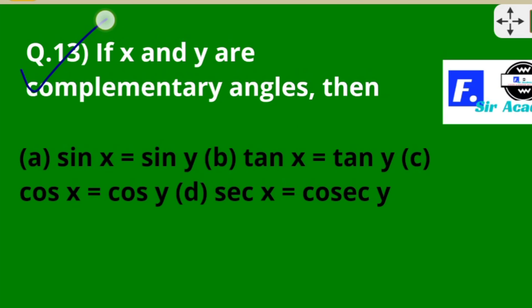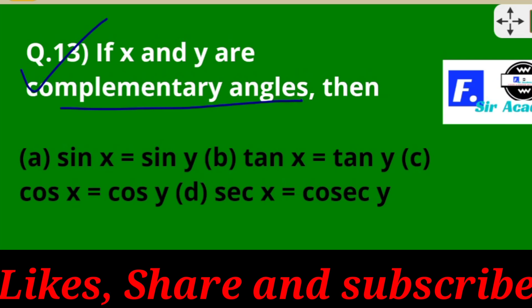Question 13: if x and y are complementary angles, which relationship holds? The options are sin x = sin y, tan x = tan y, cos x = cos y, or sec x = cos y. In complementary angle ratios: sin pairs with cos, tan pairs with cot, and sec pairs with cosec. So sec x = cos y — here sec is related to cosec — option D is correct.